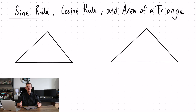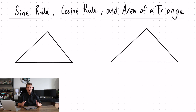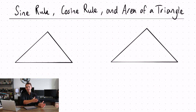Kia ora and welcome to another lesson with me, Mr Wilson. Today we're going to be looking at the sine rule, cosine rule and the area of the triangle. Specifically with sine rule and cosine rule, we're going to be looking at when to use either one of these two. So if you don't know how to use a sine rule or a cosine rule, then I suggest you go back and look at one of my previous videos on this topic.